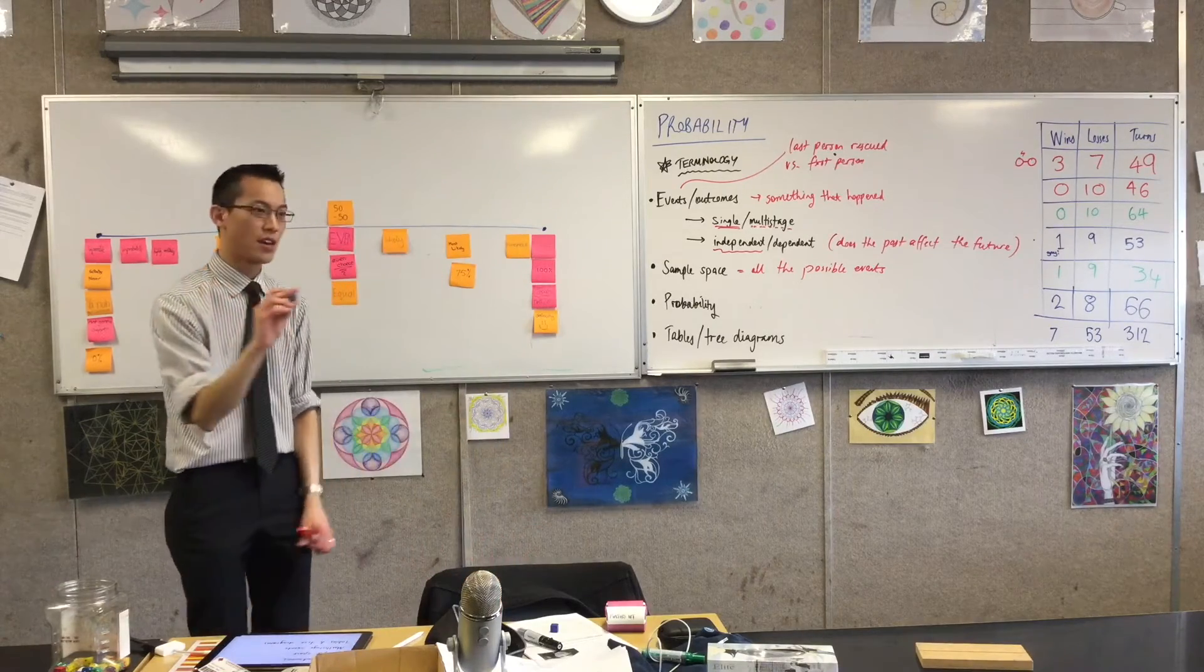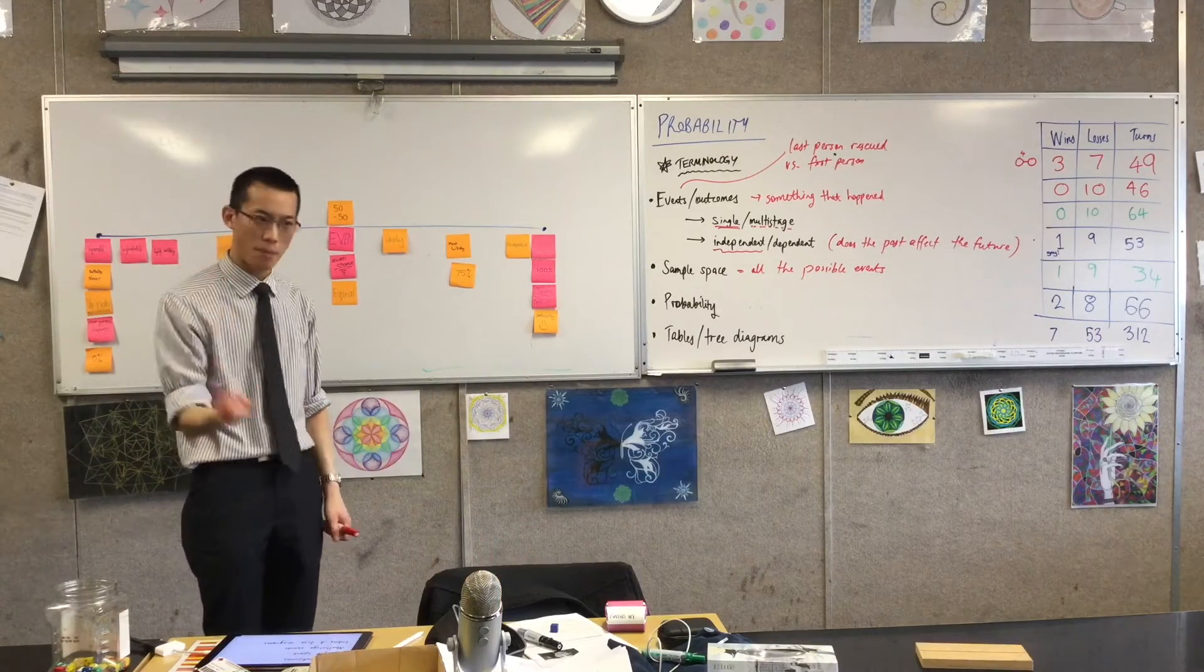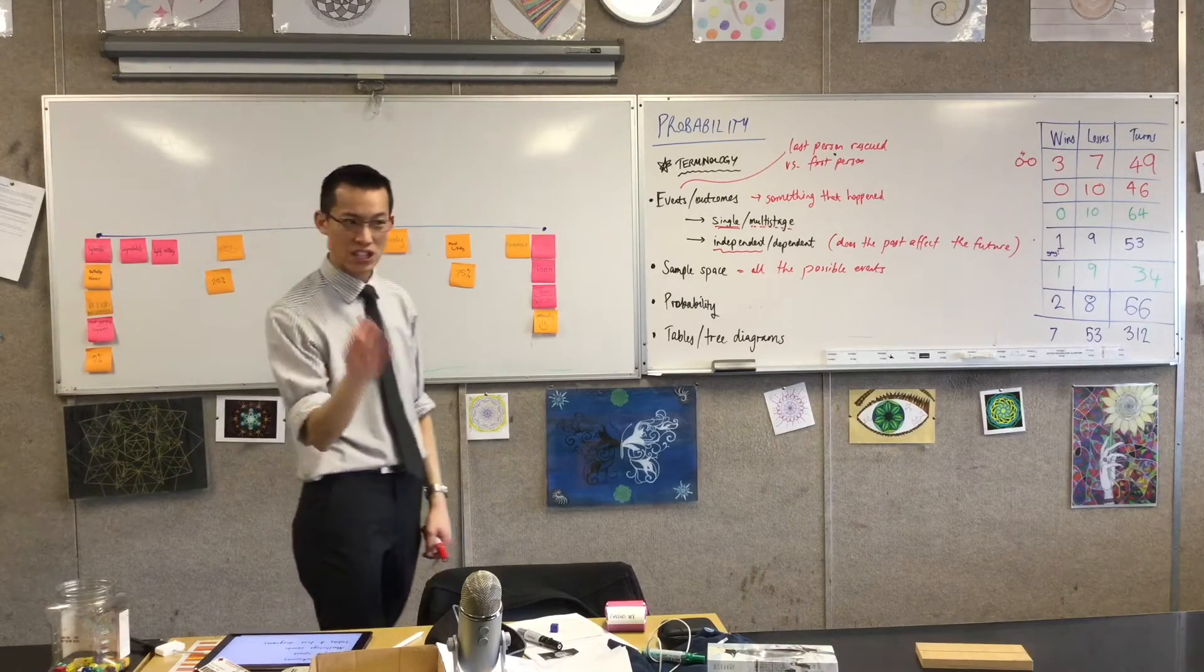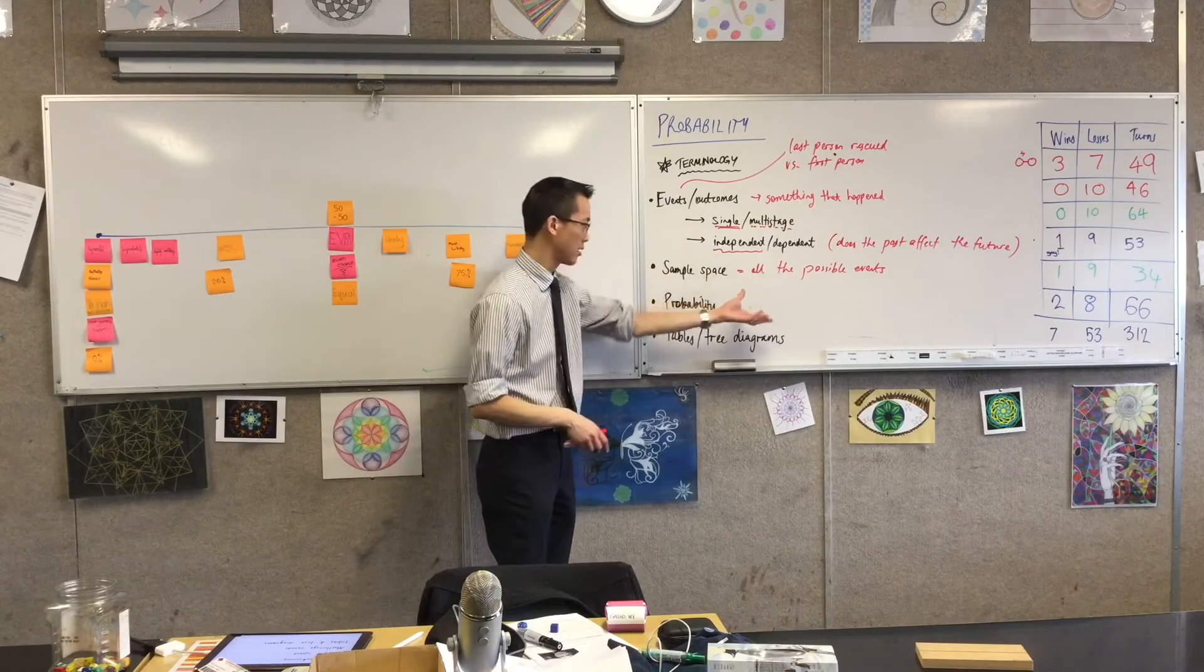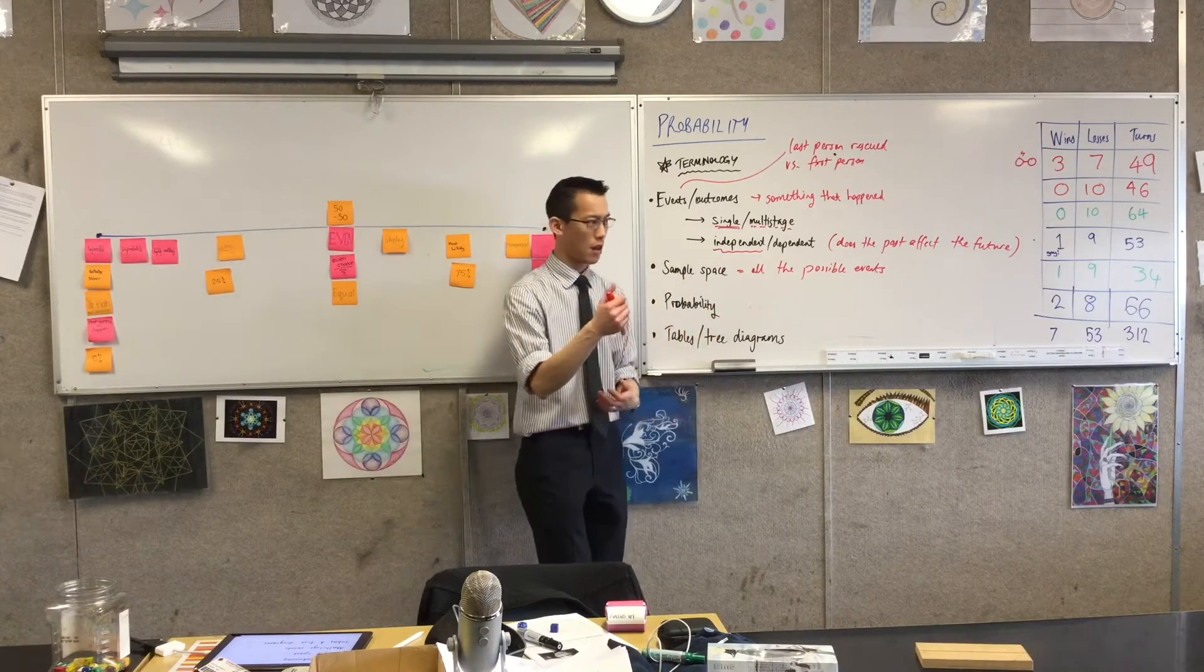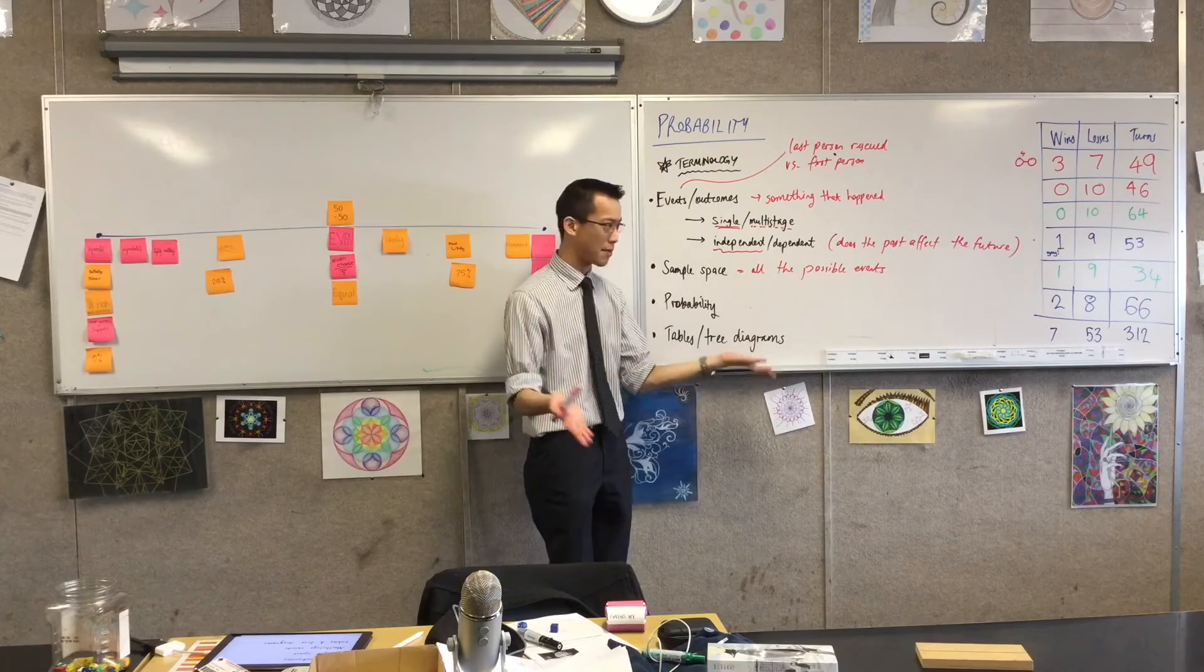For example, seven is not in the sample space for any of these dice because it's not possible - it's not part of the sample space. Six is the only number of things that can happen, so the size of the sample space is six.